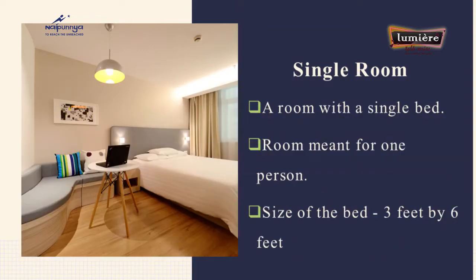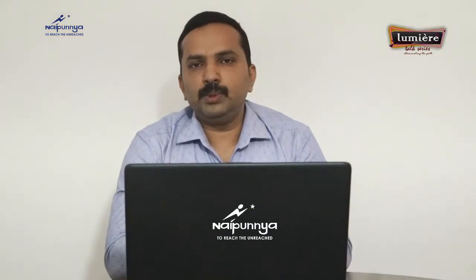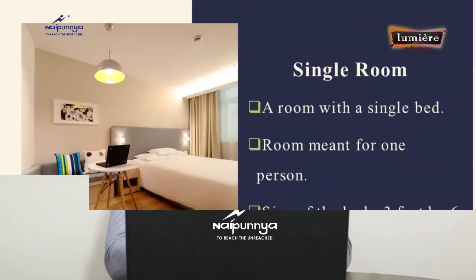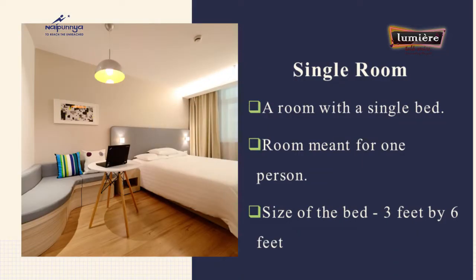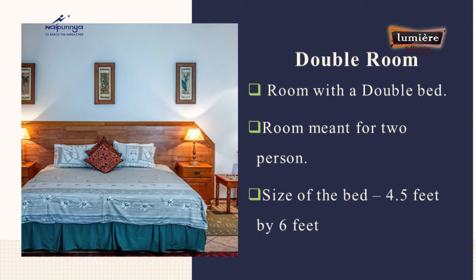Single room — a term very familiar to us. A single room is a room with a single bed meant for one person. Normally the size of the bed will be three feet by six feet. Double room is a room with a double bed meant for two persons. The size of the bed may be four feet by six feet.